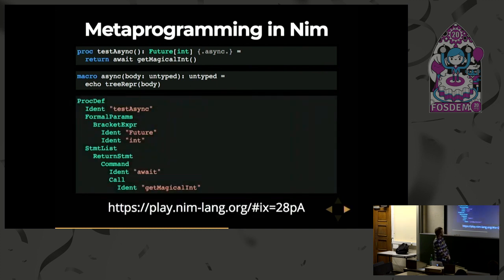And this is what that looks like. At the bottom you have a link — if you want to try it out on the NIM playground, you can run it in your browser. You get this nice tree structure where you have each of the components of our procedure: the name, testAsync; the parameters, in this case just a return value; and the body, which contains the await and the return statement.